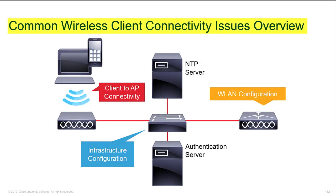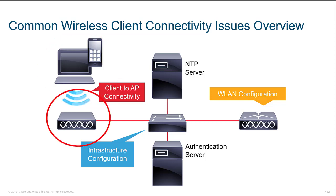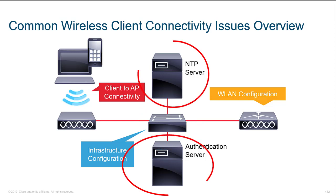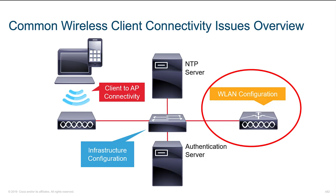In this next topic we're going to discuss common wireless client connectivity issues. We have a wireless client represented by a PC and a handheld device — a phone, iPad, or similar — connected to an access point. That access point connects to a switch, which has two servers providing services: a Network Time Protocol (NTP) server and an authentication RADIUS server. On the far right is a wireless LAN controller (WLC), giving us an overview of all components needed to provide connectivity.